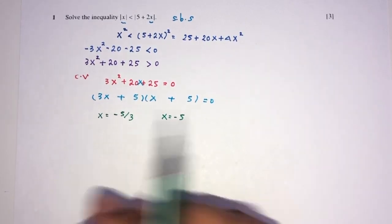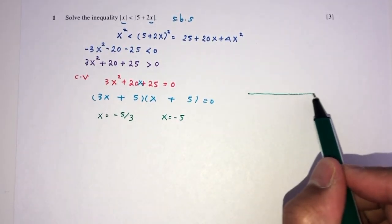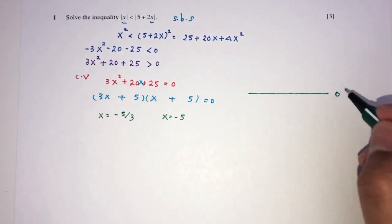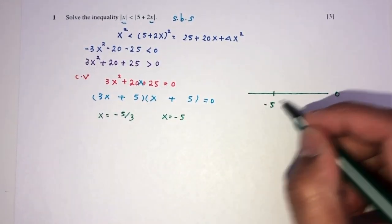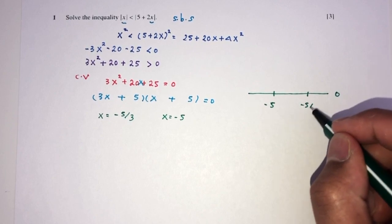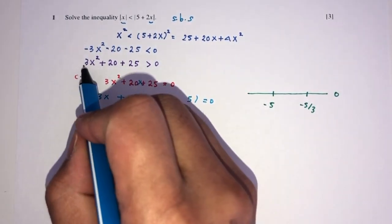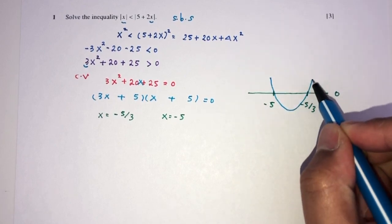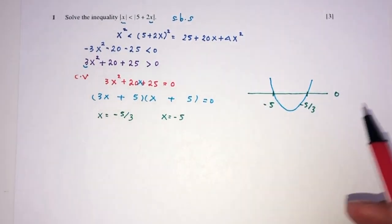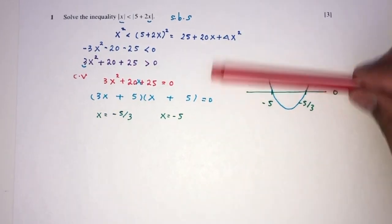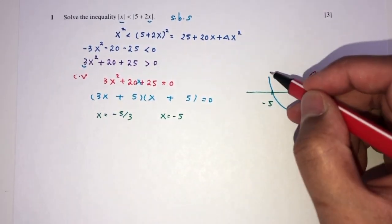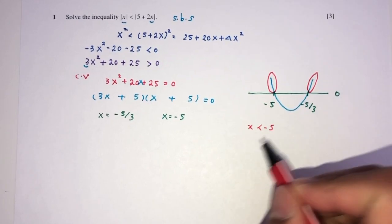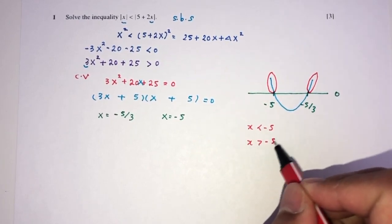Now we have to use the critical values to find the set of values of x for which this is true. On the number line, this is 0, this is minus 5, and this is minus 5 over 3. Since this is a positive quadratic, it will have a shape like a U. We want the value to be more than 0, so x has to be less than minus 5 and x has to be more than minus 5 over 3.